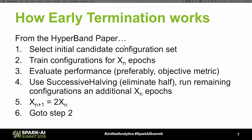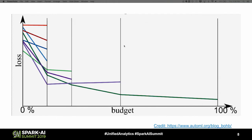How does early termination work? How many people have read the hyperband paper? In a nutshell, here's how hyperband works: you select an initial candidate configuration set, train for some number of epochs, evaluate performance — preferably the objective metric, not the loss — use successive halving to eliminate half, continue the other half, and repeat. In this example, we started with eight candidates, trained them, took the best performing ones, continued them, and in each case doubled the number of epochs trained. So you trained for roughly 12.5, then 25, then 50, then 100 epochs.